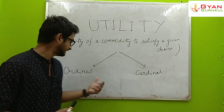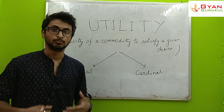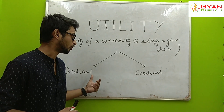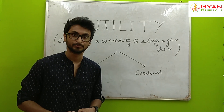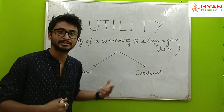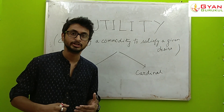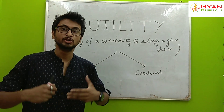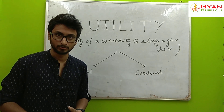There is a basic difference between the two. The Cardinal Utility approach, associated with Alfred Marshall, means that we need to measure utility numerically — that is, we assign actual numbers to the utility derived from consuming commodities.